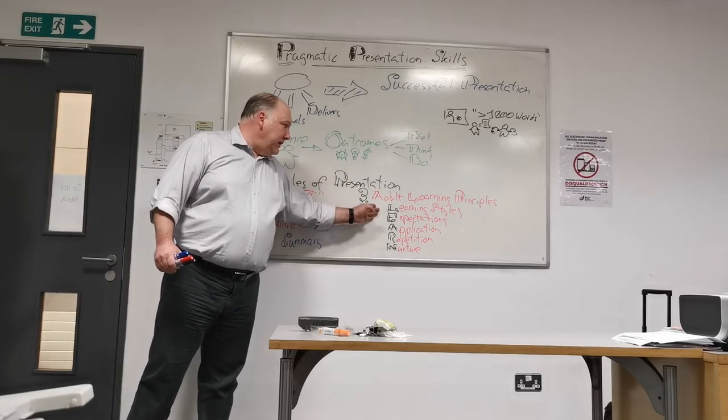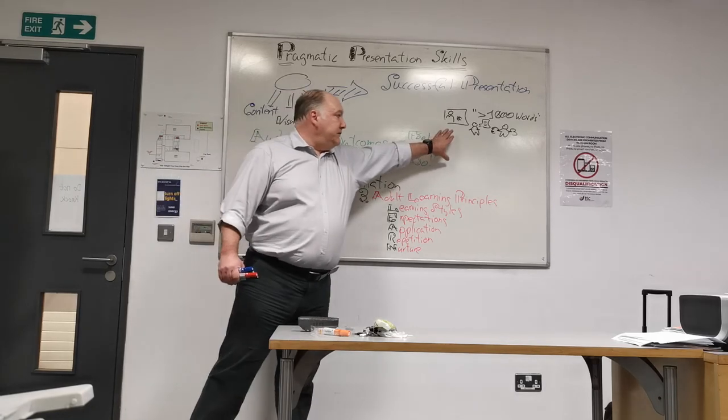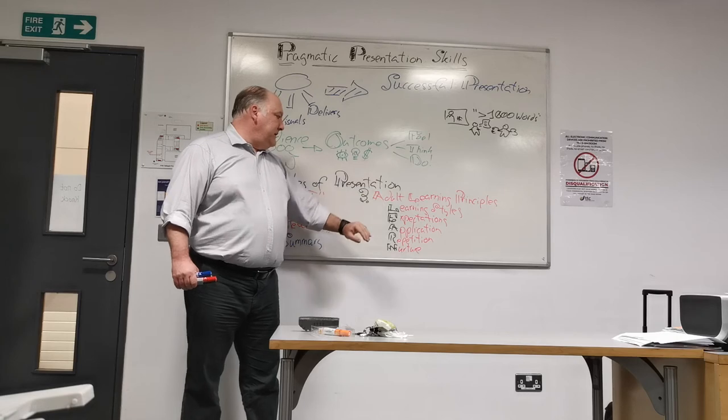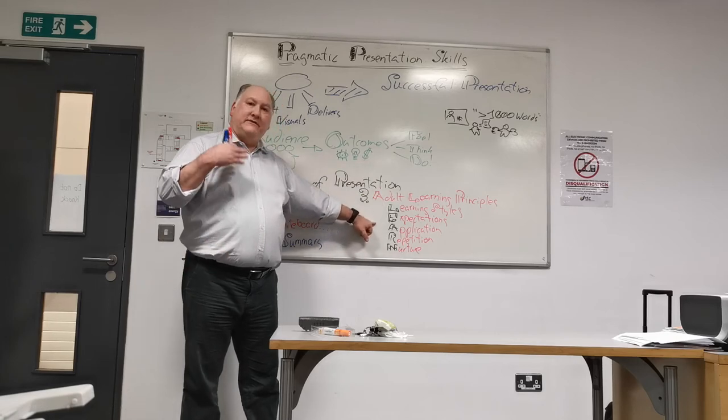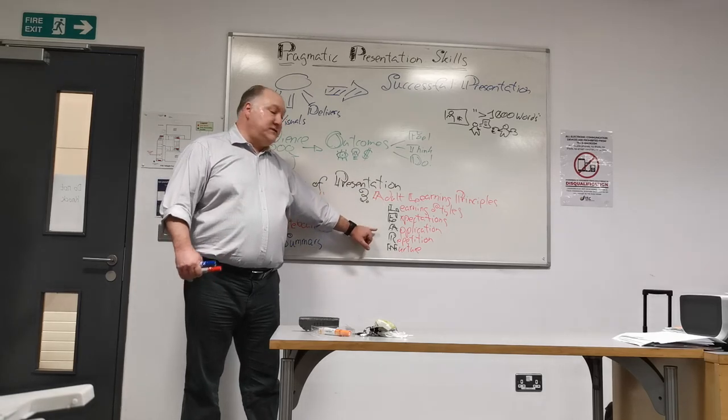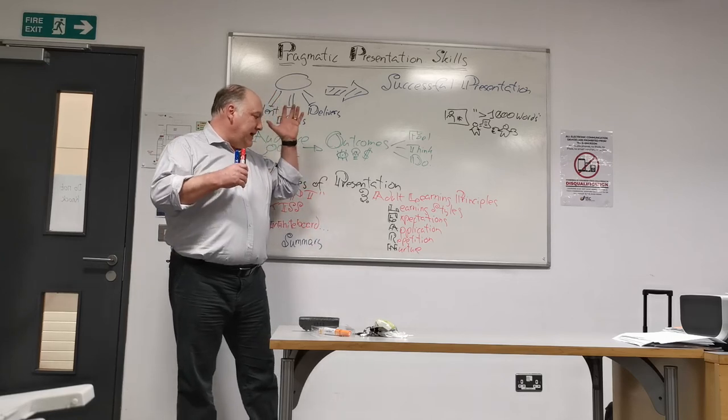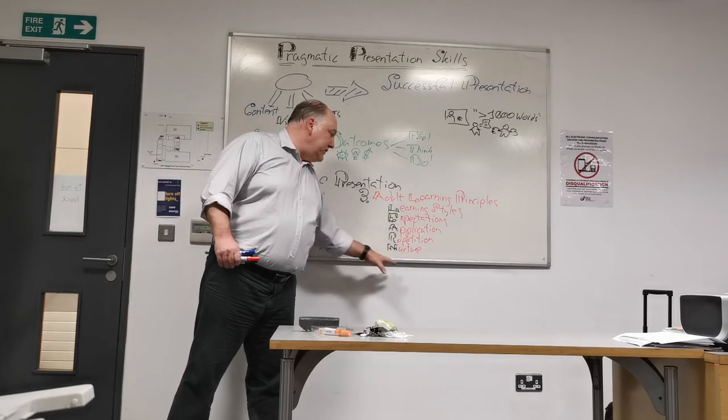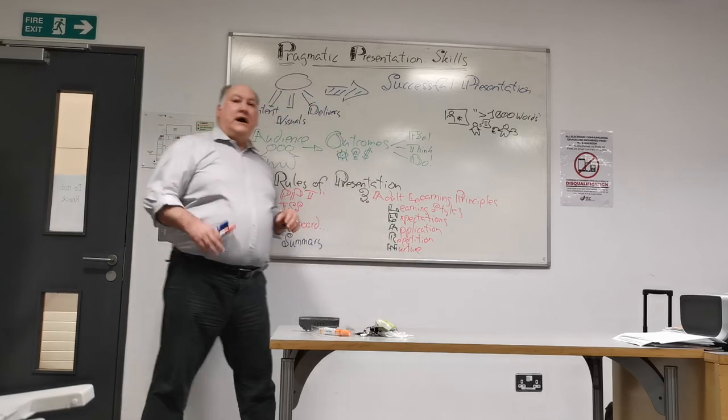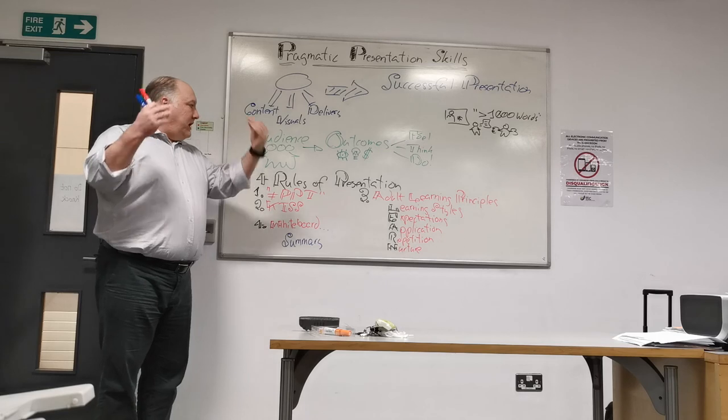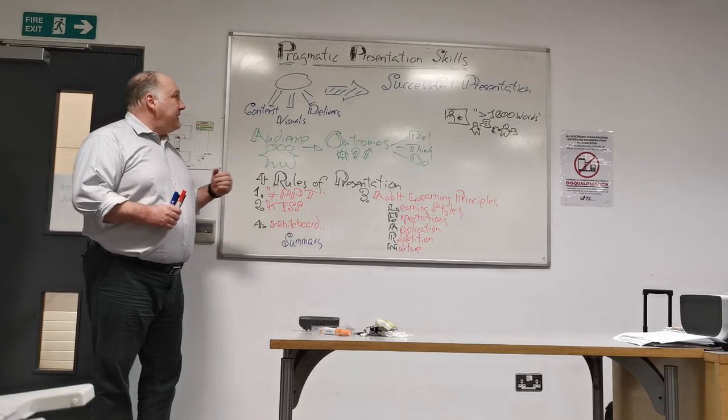The adult learning principles, we have the acronym LEARN: learning styles, make sure we use a combination. Expectations, the audience, ours. Application, that what we teach them is applicable in real life. Repetition, repetition with a difference, which is about finding that teachable moment that people go, ah, I get it. And nurture, create a good learning environment, but also ideally, aid them in getting a good work environment after the class. So that's it in a nutshell.